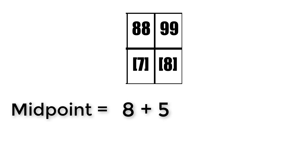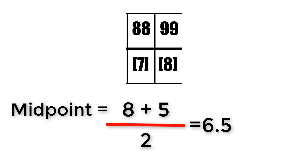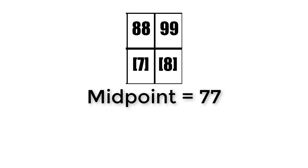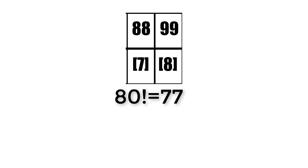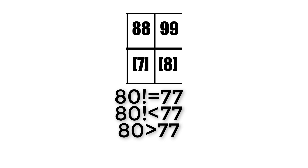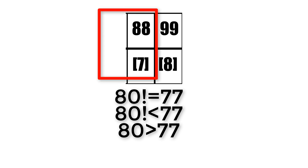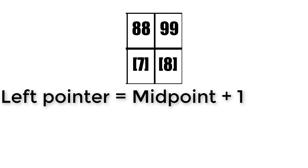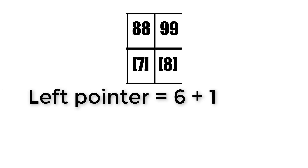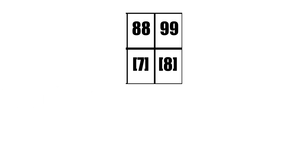We have to get the midpoint again, which is equal to 8 plus 5 over 2 — we get the rightmost value plus the leftmost value divided by 2. This equals 6.5, however due to integer division it becomes 6. So the midpoint is going to be equal to 77 because that's in the index of 6. 80 is not 77, and 80 isn't smaller than 77. 80 is greater than 77, so anything below 77 can't contain 80. So the leftmost value shall become the midpoint plus 1, meaning the leftmost value is now the index of 7. So we only have two values we care about: 88 and 99 in indexes 7 and 8.